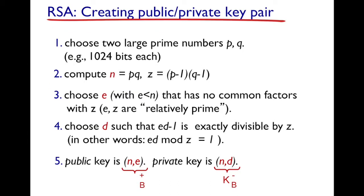We first choose two large prime numbers p and q, each 1024 bits long. We compute n = p × q, and we also compute z = (p − 1)(q − 1). Then we choose a value e that is less than n and has no common factors with z, meaning e and z are relatively prime to each other.